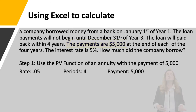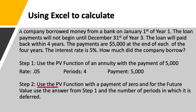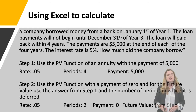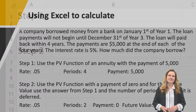Then we'll do step two. We'll calculate the present value of a lump sum, still at the rate of five percent, but now it's the two-year deferment period — that wait period. Payment is zero because we're doing present value of a lump sum, and the future value is the amount from step one. So now let's go to Excel and do it there.